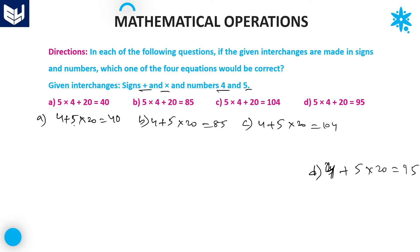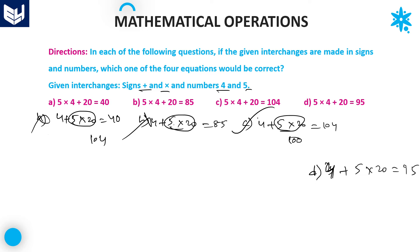Multiplication has first priority. For option C: five multiplied by twenty is one hundred, then one hundred plus four equals one hundred four — this matches the given condition. Therefore option C is the right answer.